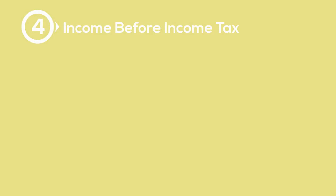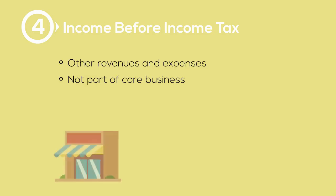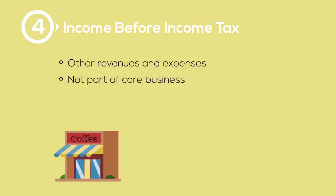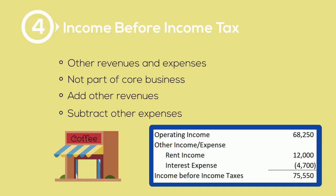The next section of the income statement deals with other income and expenses. This area is for revenues and expenses that occur in a business that are not part of their core reason for being in business. For example, a coffee shop that doesn't use all the space in their building rents out the remainder to a bookstore. The rent the coffee shop receives is considered other revenue — they're not in the rental or real estate business, so rent is not their core business function. However, it is a revenue to their business, so it is categorized as other income and listed in this section. We take operating income, add all other revenues, and subtract all other expenses to calculate income before income tax.